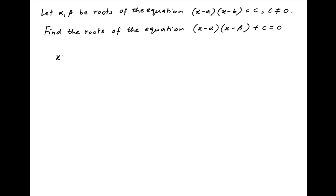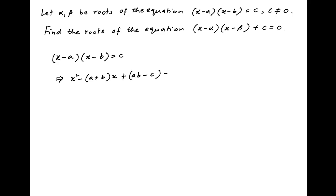We are given the quadratic equation (x − a)(x − b) = c. This can be written as x² − (a + b)x + ab − c = 0. Now we are given that alpha and beta are the roots of this equation.